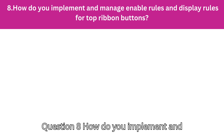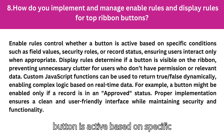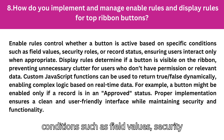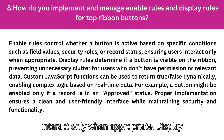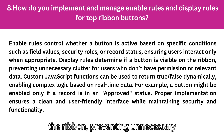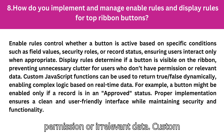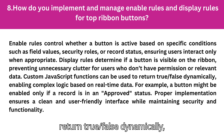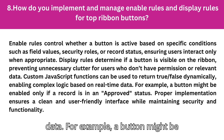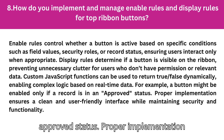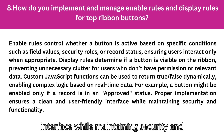Question 8: How do you implement and manage enable rules and display rules for top ribbon buttons? Enable rules control whether a button is active based on specific conditions such as field values, security roles, or record status, ensuring users interact only when appropriate. Display rules determine if a button is visible on the ribbon, preventing unnecessary clutter for users who don't have permission or irrelevant data. Custom JavaScript functions can be used to return true or false dynamically, enabling complex logic based on real-time data. For example, a button might be enabled only if a record is in an approved status.